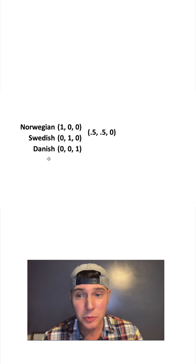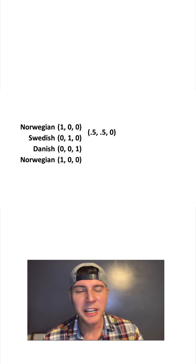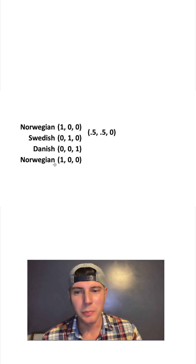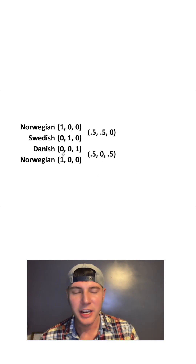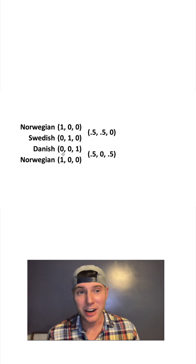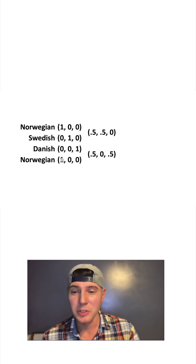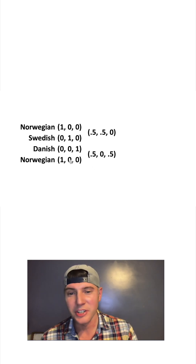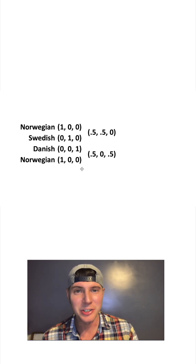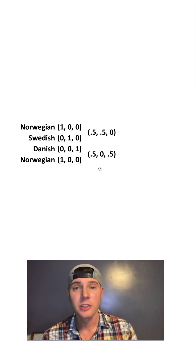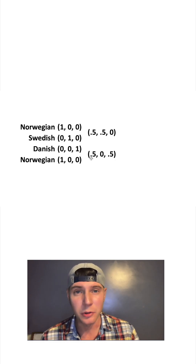Now for the Danish person, let's bring in another Norwegian person and have them have a baby. We do 0 plus 1 divided by 2, which is 0.5; 0 plus 0 divided by 2, which is 0; and 1 plus 0 divided by 2, which is 0.5. So this baby is half Norwegian and half Danish.